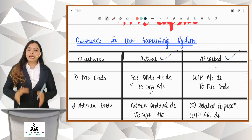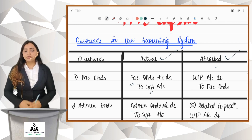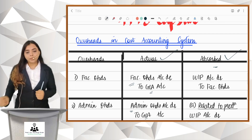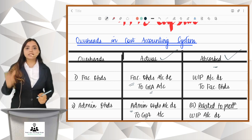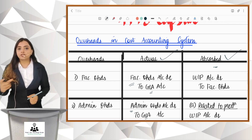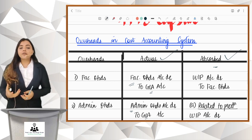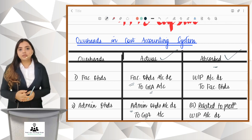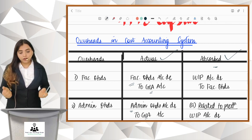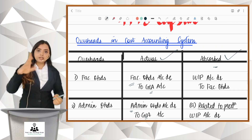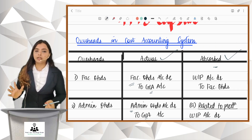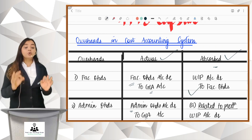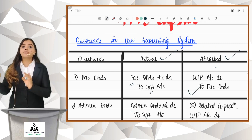Once you get the absorbed amount, you will pass the entry for absorbed overheads. Factory overheads relate to production work done, so factory overheads have to be charged to production. For production we have the WIP Ledger Control Account. Your factory overheads will be charged to WIP Ledger Control Account by passing: WIP Ledger Control Account debit to Factory Overheads.